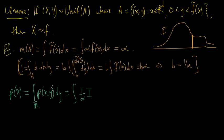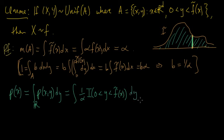Times the indicator that Y is between 0 and F tilde of X, right? It has to be in this set here. The pair X, Y has to satisfy this constraint, and the density is 1 over alpha, the constant. Integrating with respect to Y.